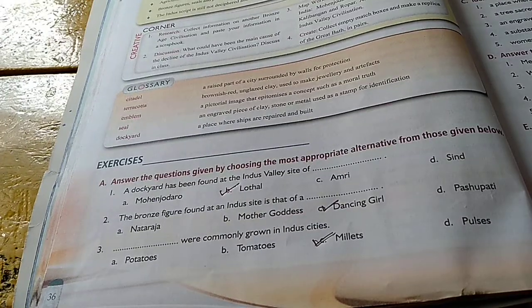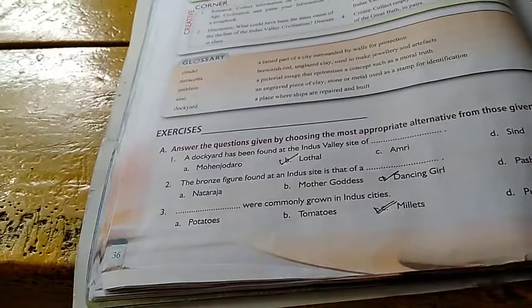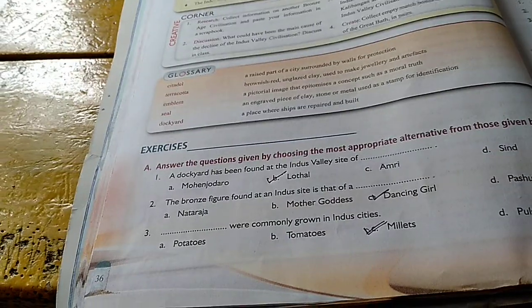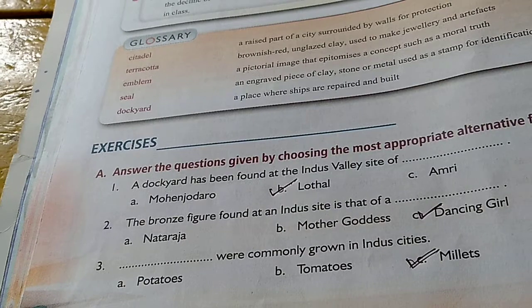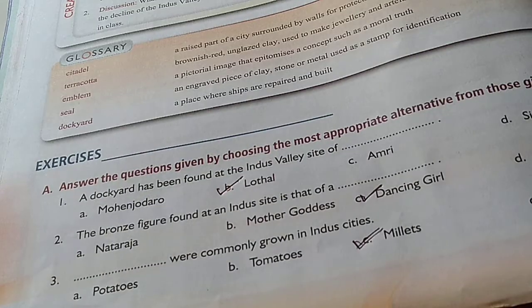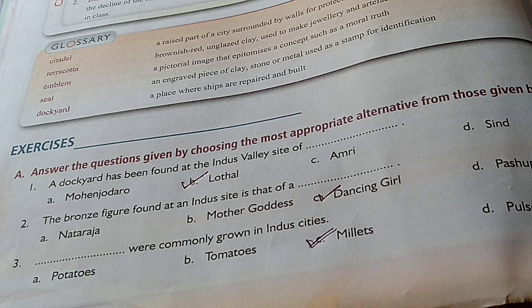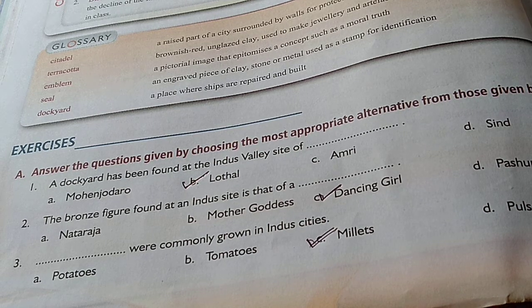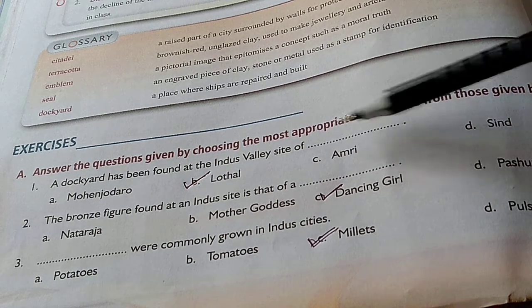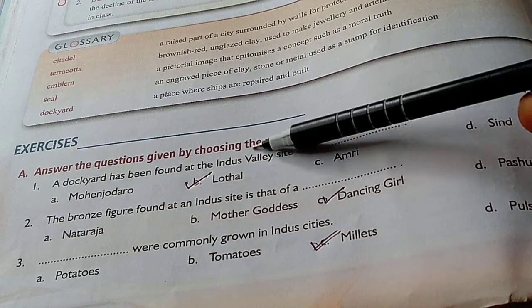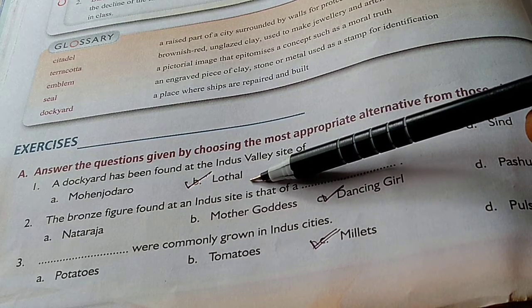Let us do the exercises now. Let us do the MCQs first. The first question is: a dockyard has been found at the Indus Valley site of - where were dockyard remains found? The answer is Lothal.